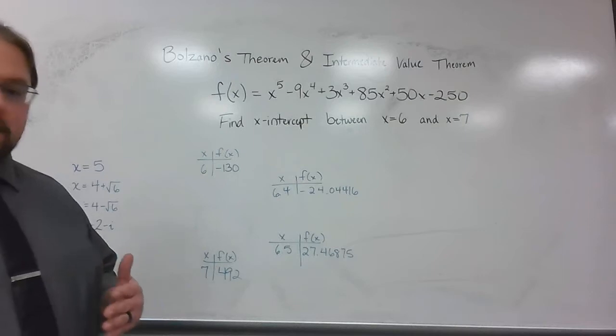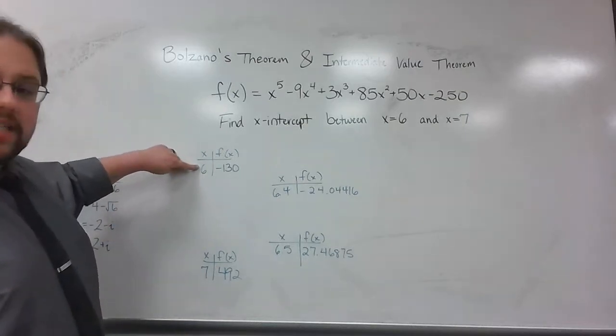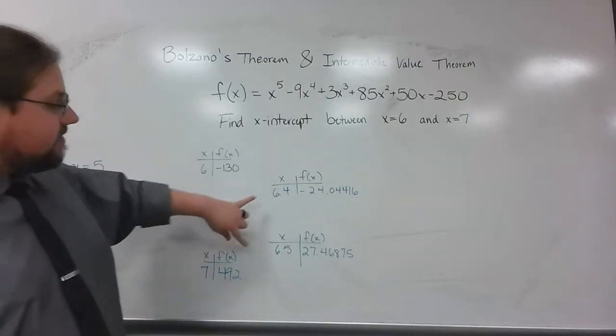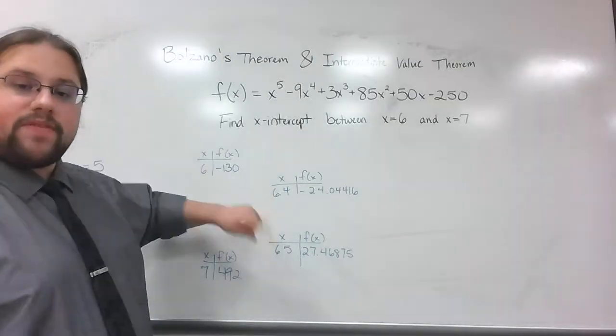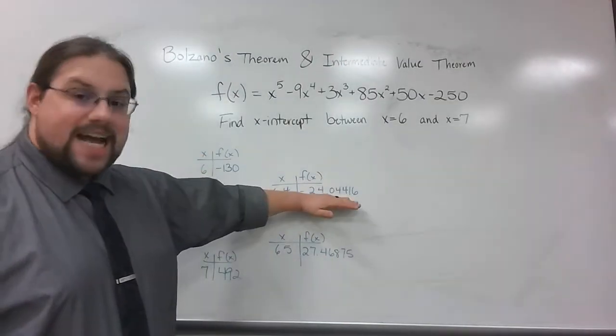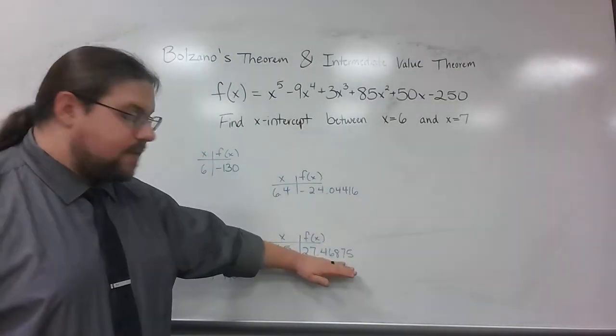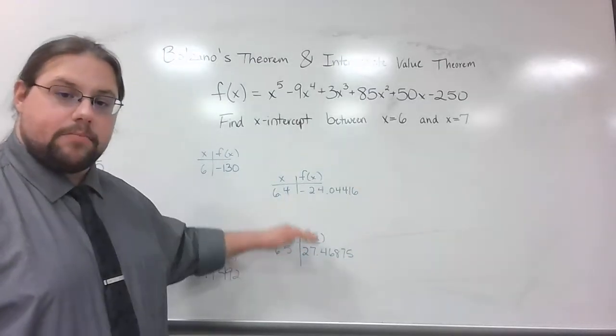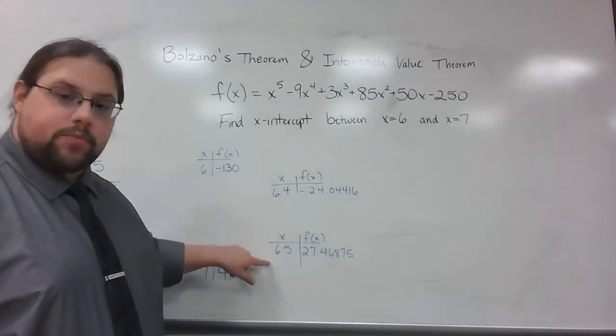Now, I've narrowed down my playing field. I know not just that it's between 6 and 7, but I know even more that it's between 6.4 and 6.5. Why? Because that's a negative number and that's a positive number. I know it has to be between them.